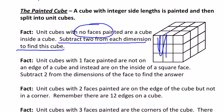And so you always are going to be subtracting two from the dimensions to find out what the inside looks like. And it turns out that it's always going to be a cube assuming that this is a cube to start with. So that makes it pretty easy. Subtract two from the dimensions and then calculate the number of unit cubes in the cube that's left.